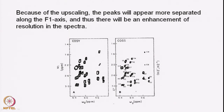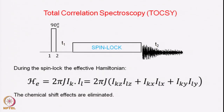That is the advantage of doing upscaling of chemical shifts. Now we will take up another experiment called Total Correlation Spectroscopy — TOCSY. This is an experiment very commonly used in assigning spin systems and is very popular because it has very important sensitivity advantages, as we will see as we discuss further.